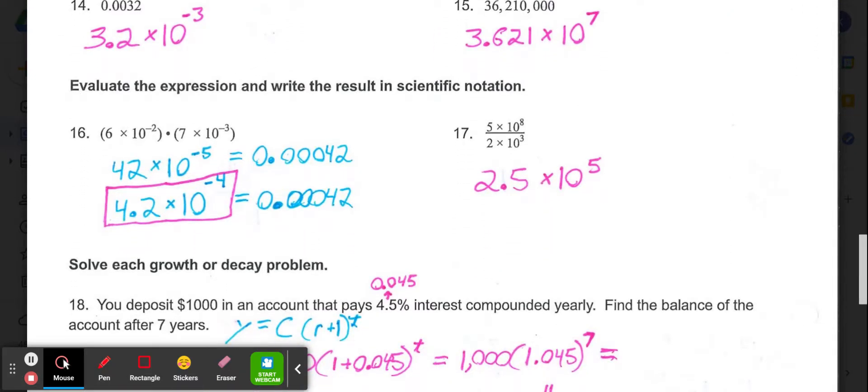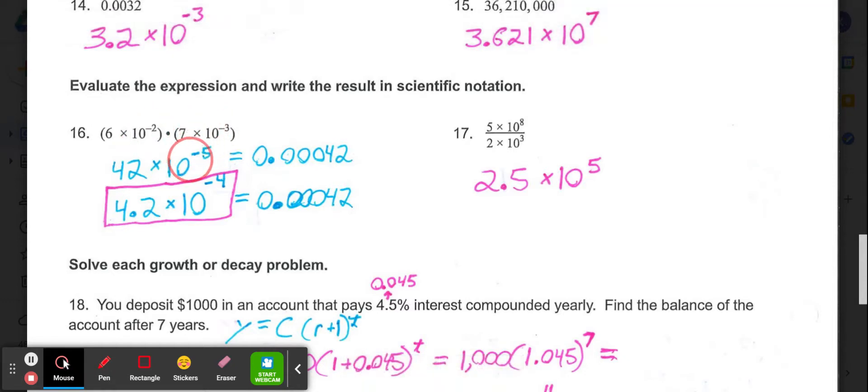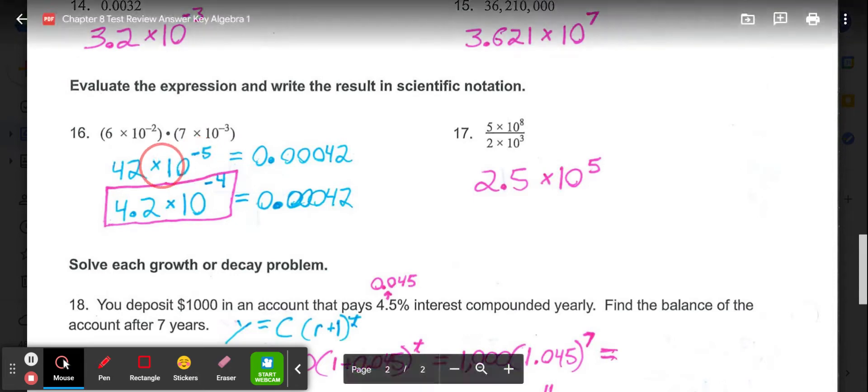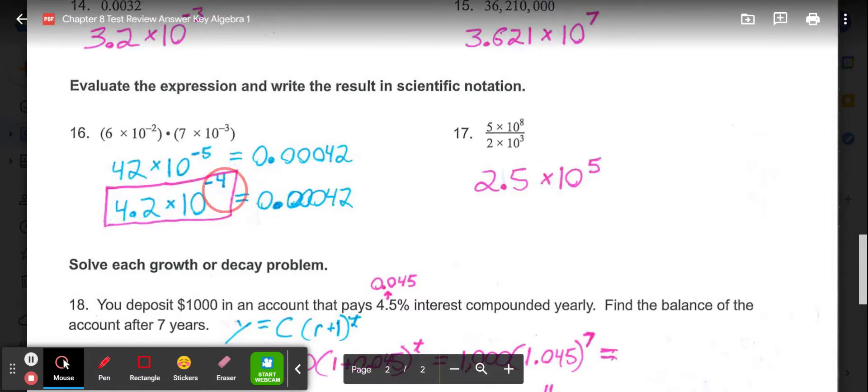In 16 and 17, we're evaluating the expression and then writing it in scientific notation. So in 16, we need to multiply the numbers out in front. So 6 times 7 gives us 42. 10 to the negative 2nd times 10 to the negative 3rd would be 10 to the negative 5th. So that means we're close to our final answer but not quite there, because for scientific notation we can't have two digits here. It would need to be one digit in front of the decimal. So instead of 42, this would be 4.2, and the 10 to the negative 5th becomes 10 to the negative 4th. And as you can see, they both would end up giving us the same decimal. But this bottom one is our correct scientific notation.